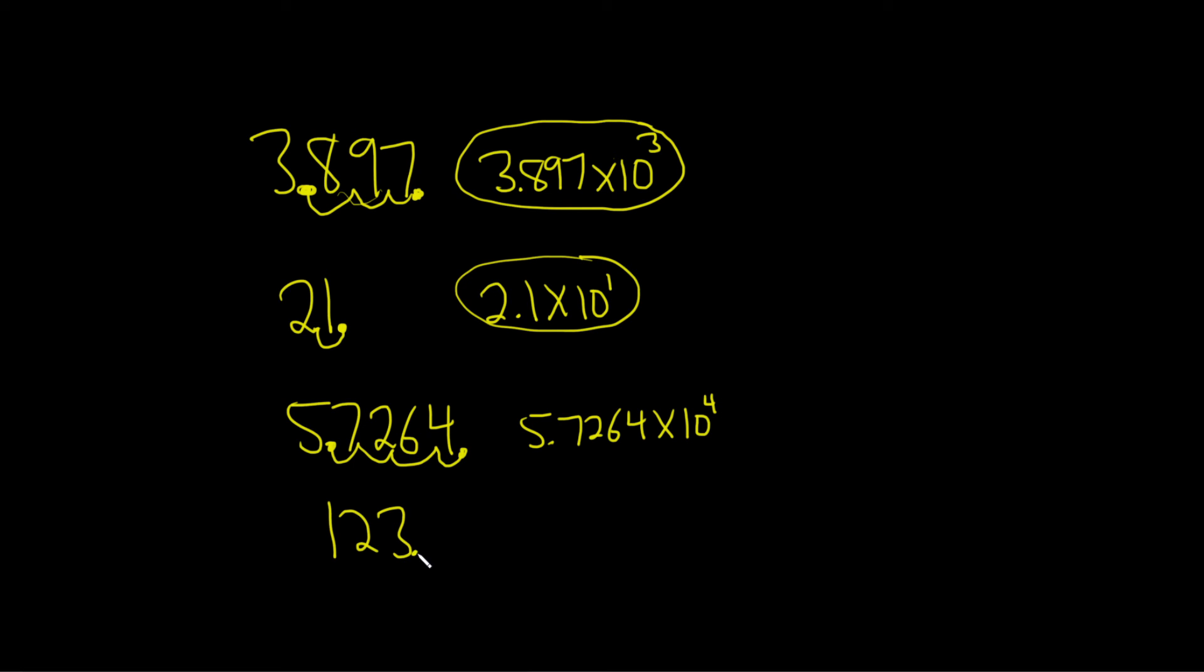How about this one? We start here, 1, 2, so that'll be 1.23. We did it twice, so times 10 squared. And that would be the final answer for all four examples.